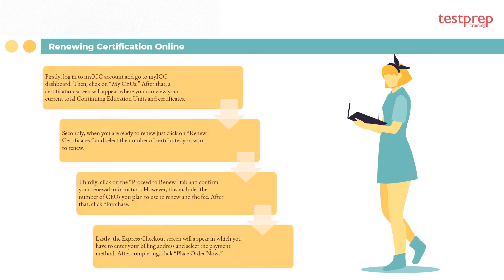Renewing certification online: First, log into your My ICC account, go to My ICC Dashboard, then click on My CEUs. A certification screen will appear where you can view your current total continuing education units and certificates. Second, when you are ready to renew, click on Renew Certificates and select the number of certificates you want to renew. Third, click on the Proceed to Renew tab and confirm your renewal information, including the number of CEUs you plan to use and the fee, then click Purchase. Fourth, the Express Checkout screen will appear where you enter your billing address, select a payment method, and click Place Order.